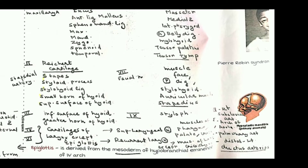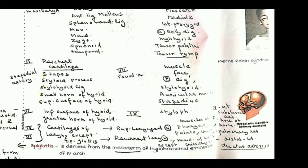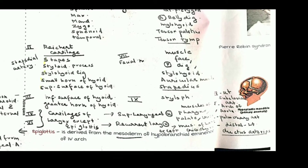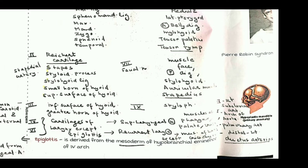The second pharyngeal arch artery is the stapedial artery. The cartilage is called Reichert's cartilage, and its derivatives can be remembered by the five S's: stapes, styloid process, stylohyoid ligament, small horn of hyoid bone, and superior surface of hyoid. The nerve is the seventh nerve — the facial nerve — and the muscles include muscles of facial expression, posterior belly of digastric, stylohyoid, auricular muscles, and stapedius.